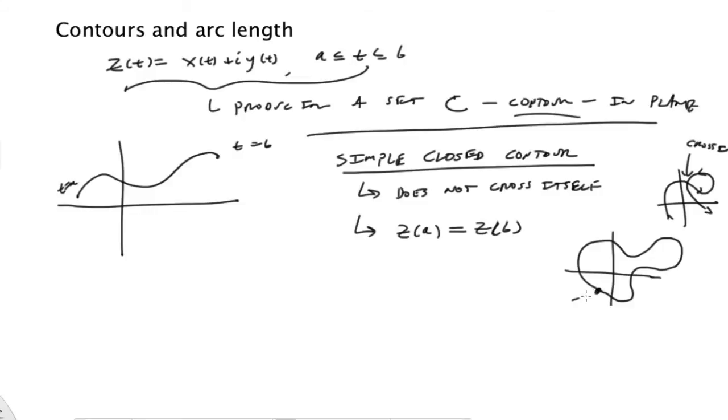So you have a point there, z(a), and it leaves z(a) like this. Then eventually it comes around like that at z(b). Finally, we have another kind of a modifying thing. We want it to be positively oriented. And that means it goes around counterclockwise.